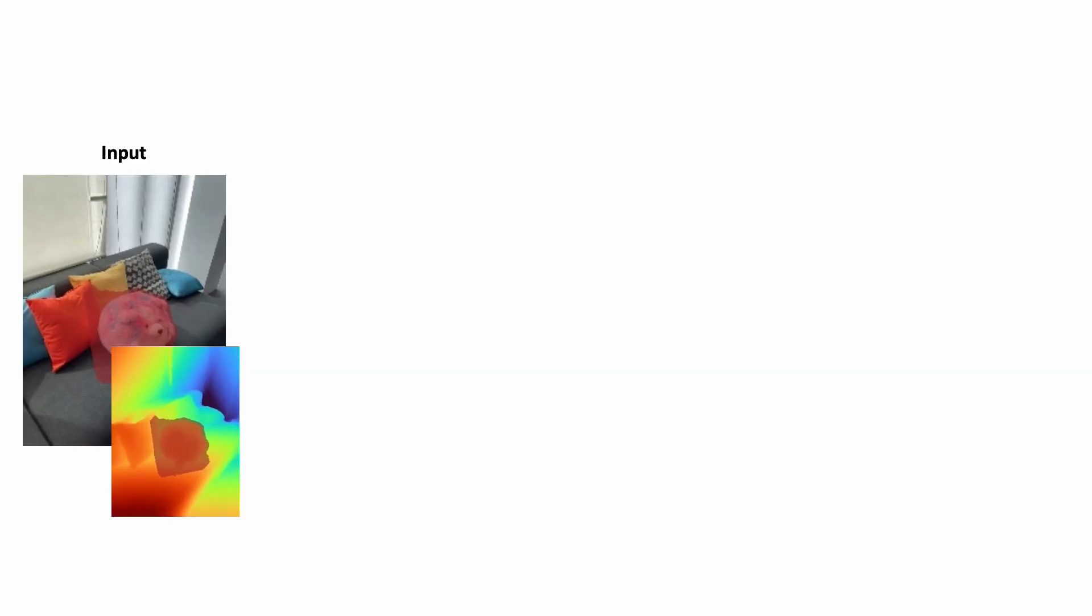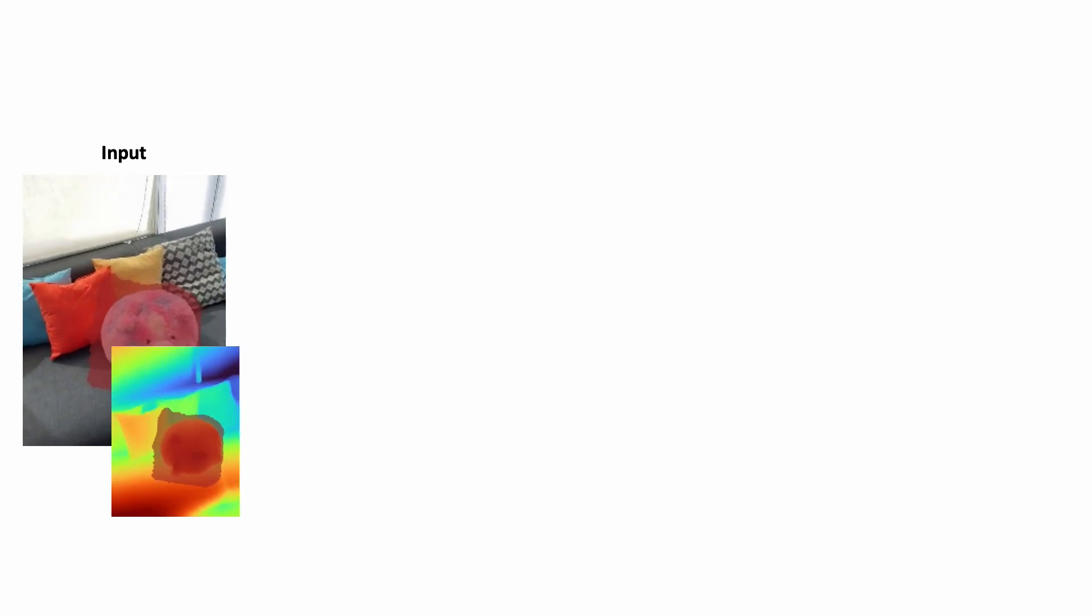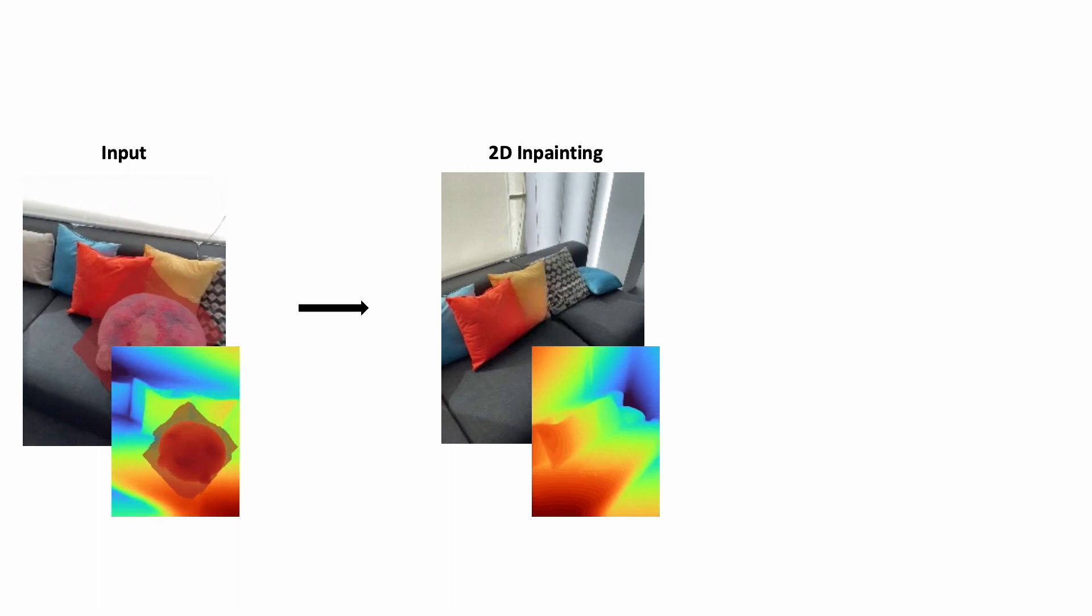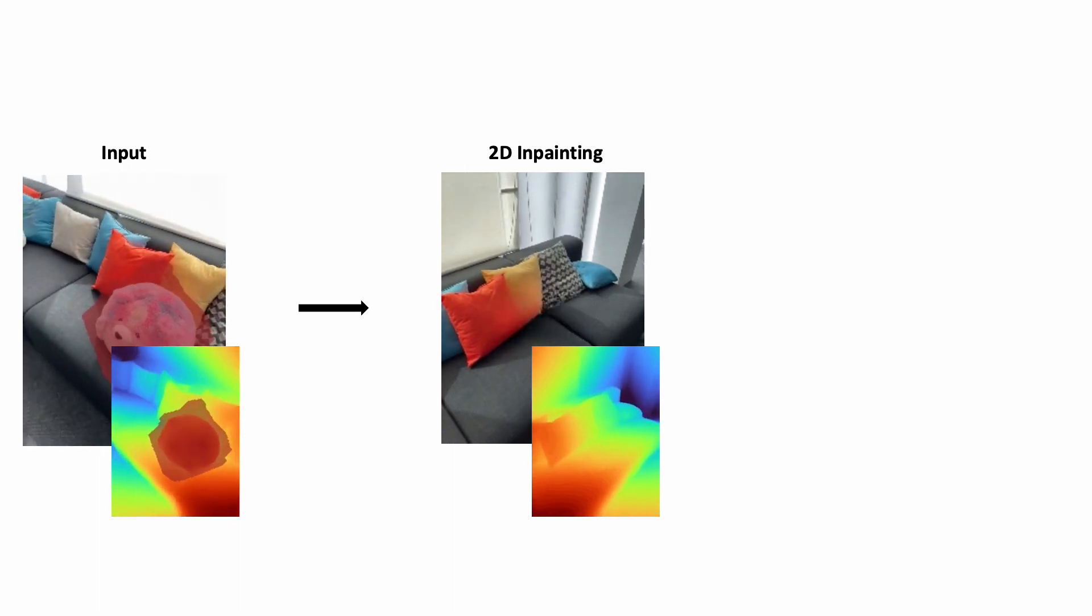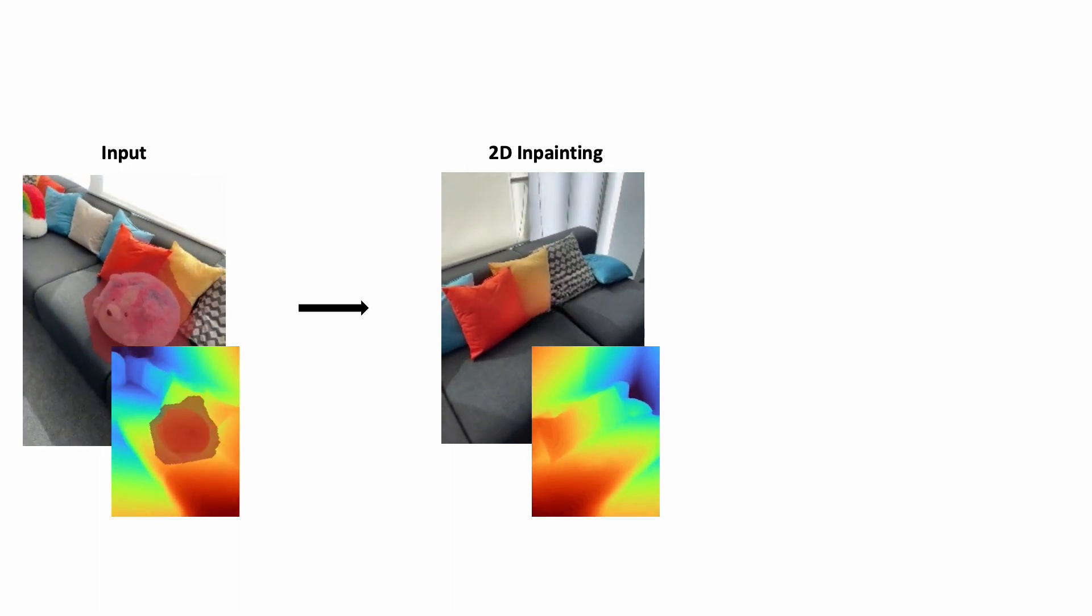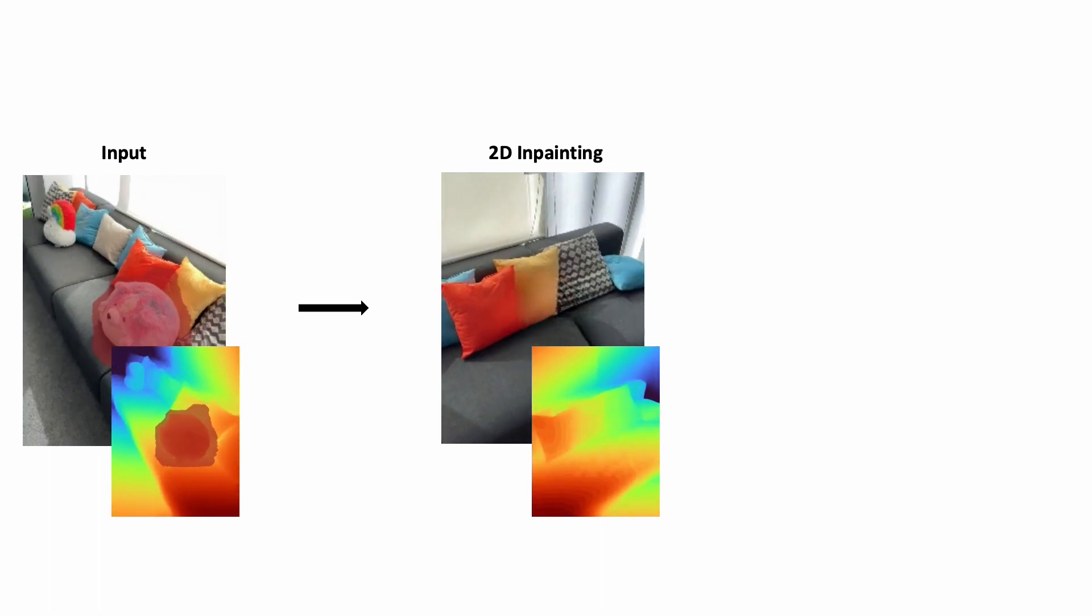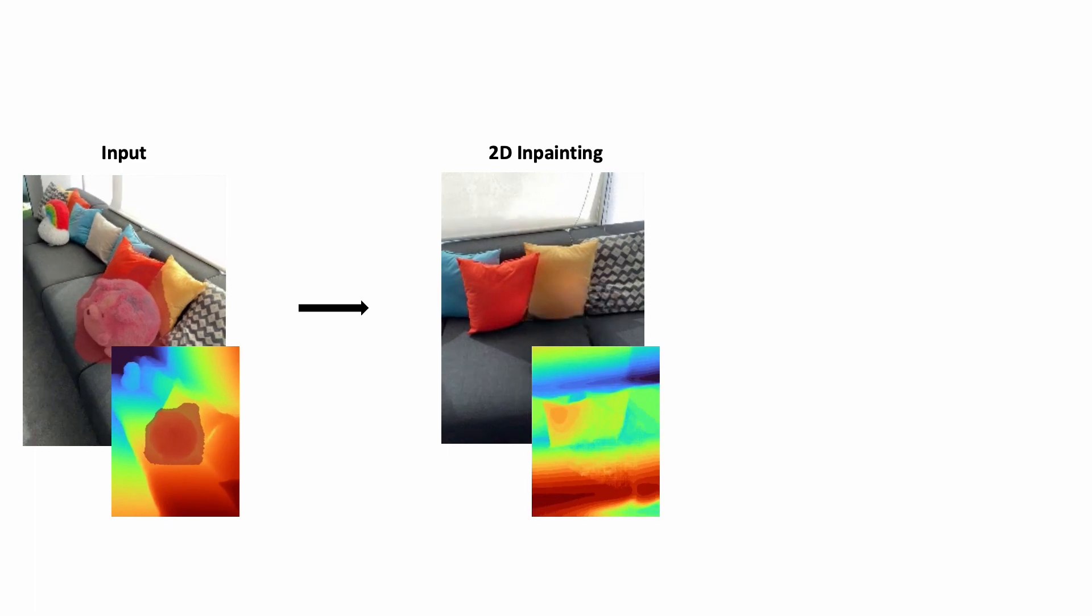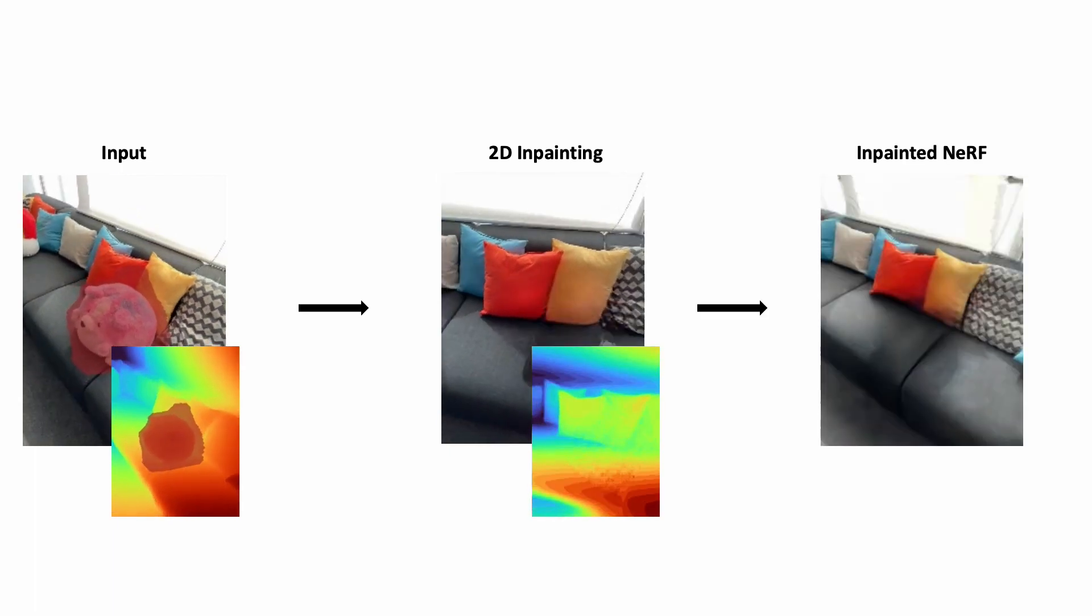We take as input a video with known depths and camera poses. The user specifies a 3D bounding volume to indicate the object to mask out from all input frames. We leverage an off-the-shelf 2D inpainting network to inpaint the color and depth values inside the masked regions. But notice that the inpaintings aren't multi-view consistent, they change between input frames.